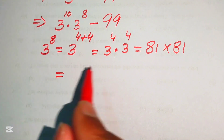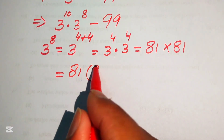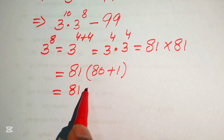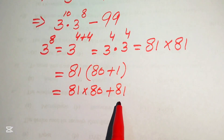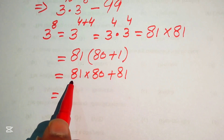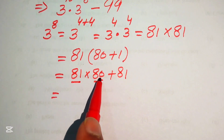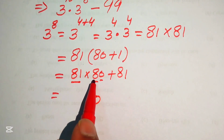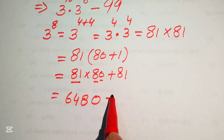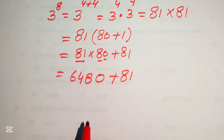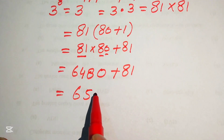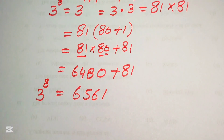We break 81 as 80 plus 1 and multiply: 81 times 80 plus 81 times 1. Multiplying 81 by 80: 0 times 81 is 0, 8 times 81 gives 8 ones are 8 and 8 eights are 64, so we get 6480. Adding 81 gives us 6561. This is the value of 3 to the power of 8.